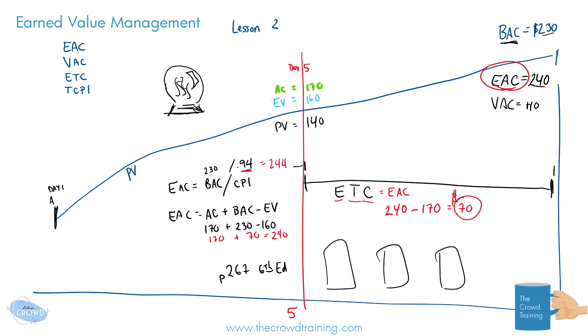Now, the other thing that we can look at is, well, at what rate do we have to complete the project? So a to-complete performance index. So to get to that completion, what kind of rate or clip or ratio do we need to work at in order to meet whatever our target is going to be?